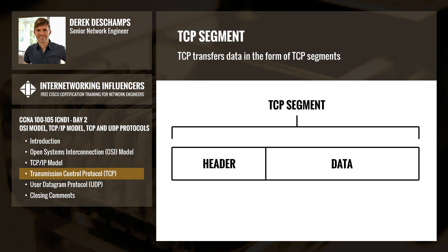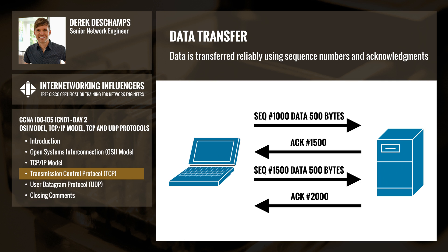TCP transfers data in the form of segments. Segments are created by taking the information in a data stream, dividing it into smaller pieces, and attaching a header. TCP transfers data reliably by using sequence numbers and acknowledgements. Each TCP segment is assigned a sequence number which is incremented with each segment sent. The sequence number is incremented by the size of the data sent in the last segment. For example, if we send a segment with the initial sequence number 1000 that contains 500 bytes of data, the next segment will have a sequence number of 1500.